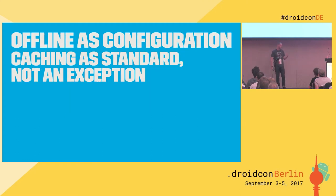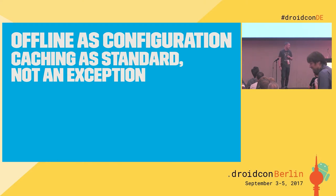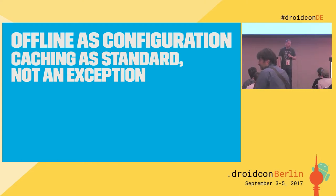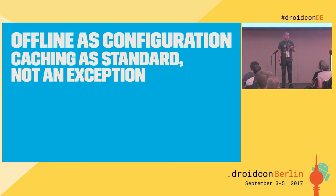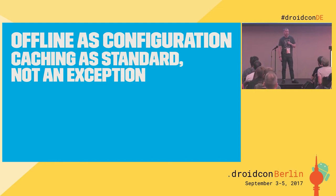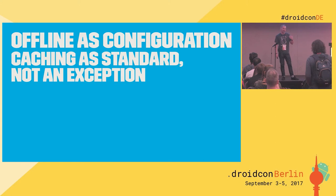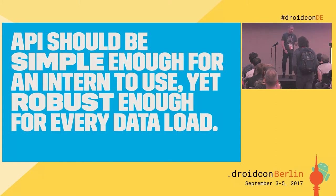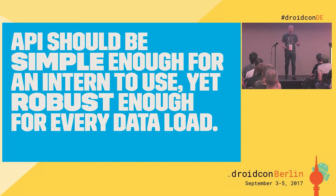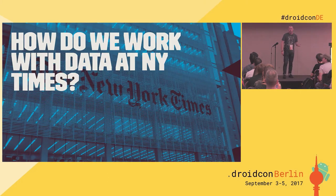Offline should be a configuration. Caching as a standard, not an exception. One of the good things about the Times is we pride ourselves in allowing our readers to read the news offline. We really feel offline should be done first and not as an afterthought. And the API should be simple enough for an intern to use yet robust enough to meet all of our needs.